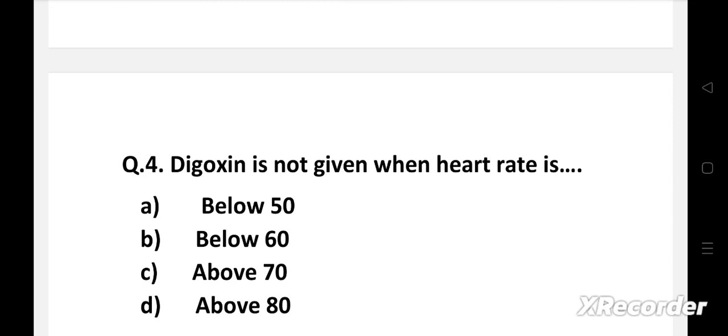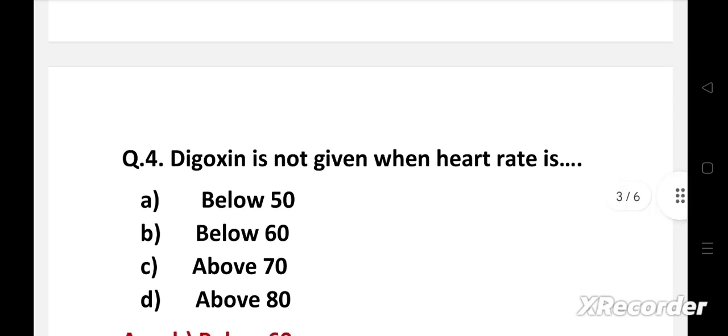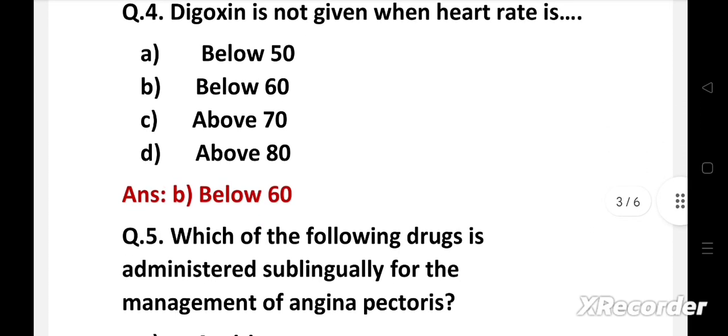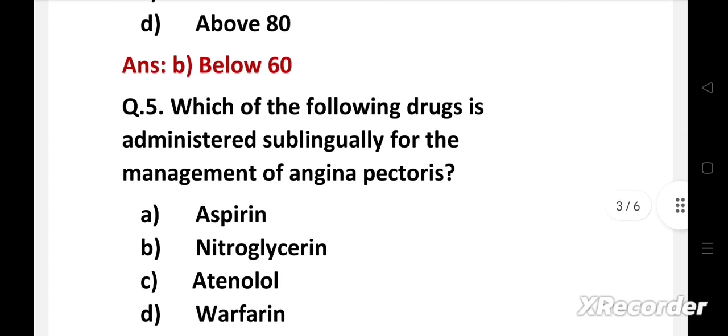Next question: Digoxin is not given when heart rate is option A: below 50, B: below 60, C: above 70, D: above 80. Right answer is option B, below 60. Digoxin should not be given if heart rate is below 60 beats per minute because digoxin further reduces the heart rate and it could be dangerous.